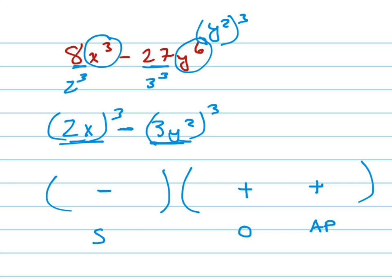The signs: the same sign, negative was there, the opposite sign, which is a positive, and then the last is always positive. And now I'm going to take these numbers, 2x, 3y squared, and write them in there.